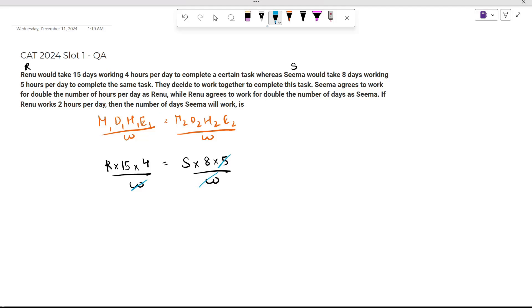If we try to solve this, W and W get cancelled out. This is 5, then dividing gives 3 from the 15. This is 4, then dividing gives 2 from the 8. So 3R equals 2S, or R upon S comes out to be 2 by 3.